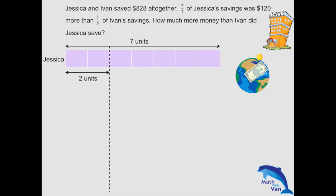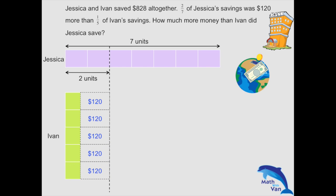Two units of Jessica's savings was $120 more than one-fifth of Ivan's savings. But we can't call Ivan's savings one unit or five units — to differentiate it, we have to denote it with a different color block, so I'll call it green. So for every one part, it's $120 less than two units of Jessica's savings. The whole of Ivan's savings would then be five parts, each $120 less.